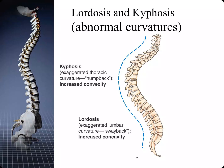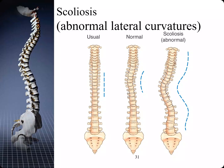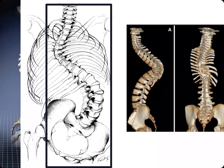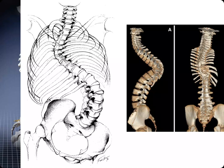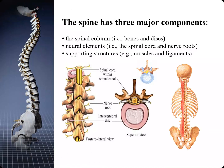An abnormal forward bending of the spine in the thoracic area is called kyphosis, which often happens as we age. Lordosis is an exaggerated lumbar curvature. Scoliosis is an abnormal lateral curvature — here we see a combination of kyphosis and scoliosis, with scoliosis being one or more abnormal lateral rotational curves and kyphosis being an abnormal posterior deviation. The three major components of the spine are the spinal column, made up of bones and discs; the neural elements, which are the spinal cord and nerve roots; and the supporting structures, which are the muscles and ligaments.